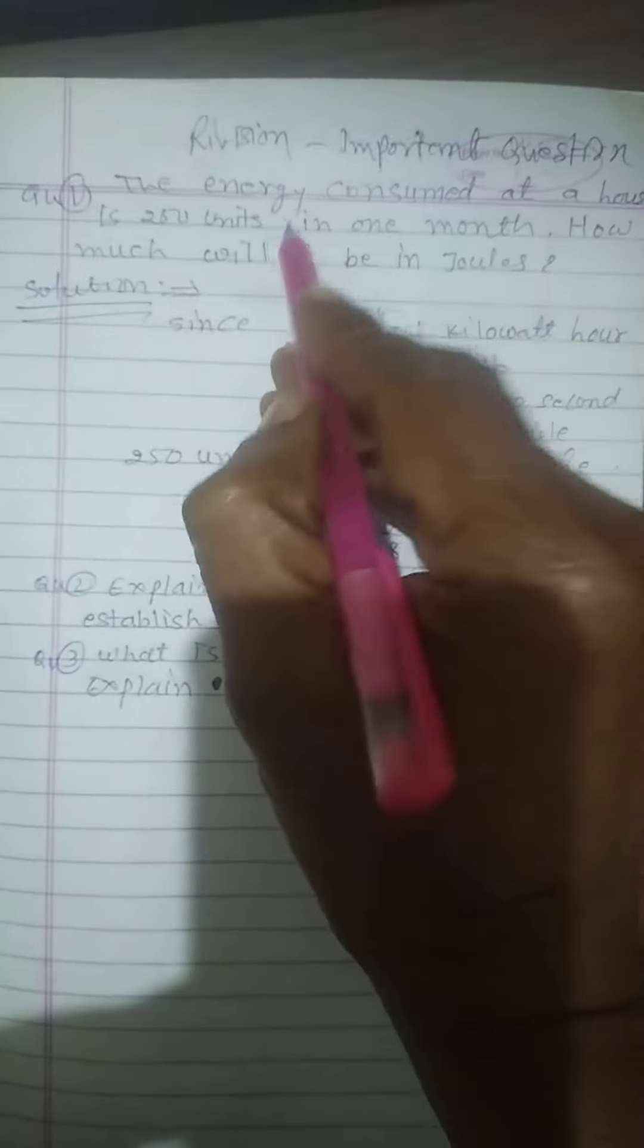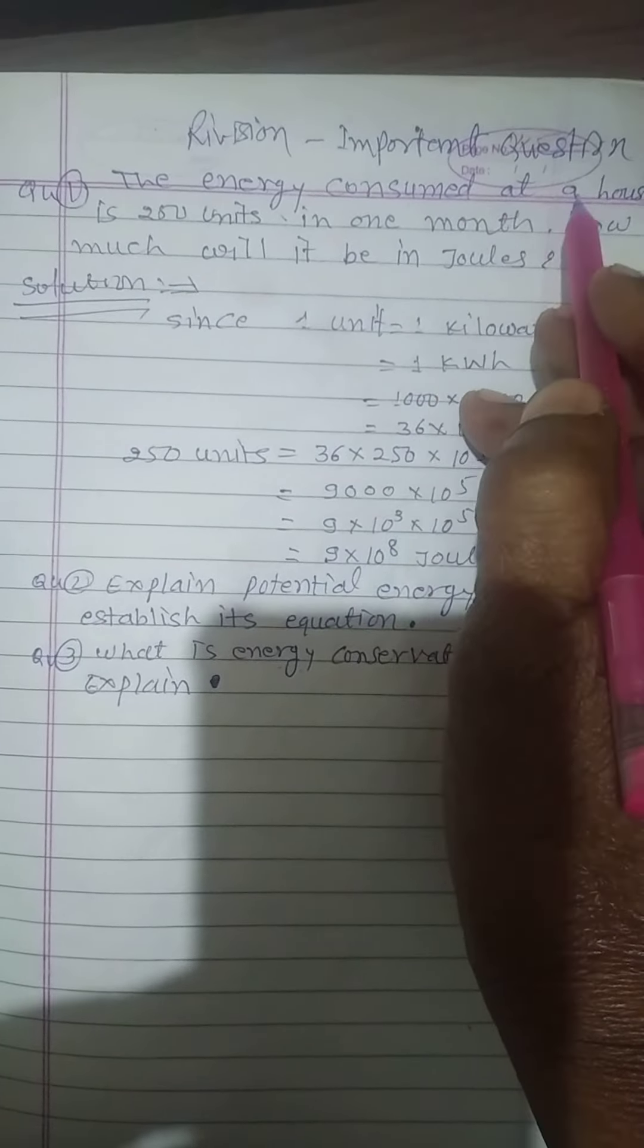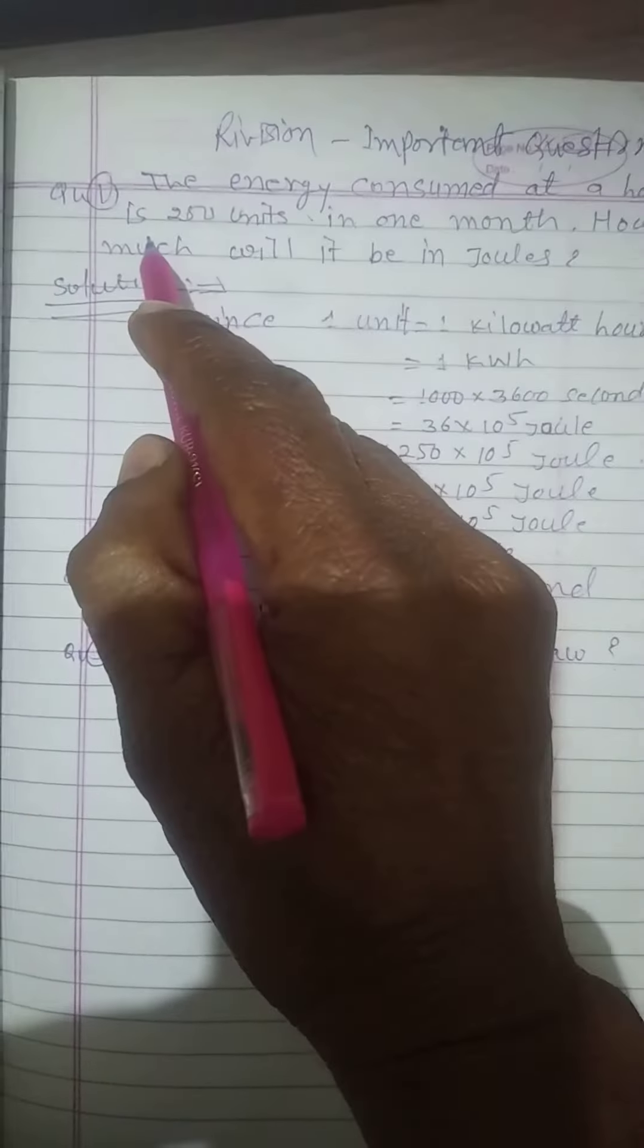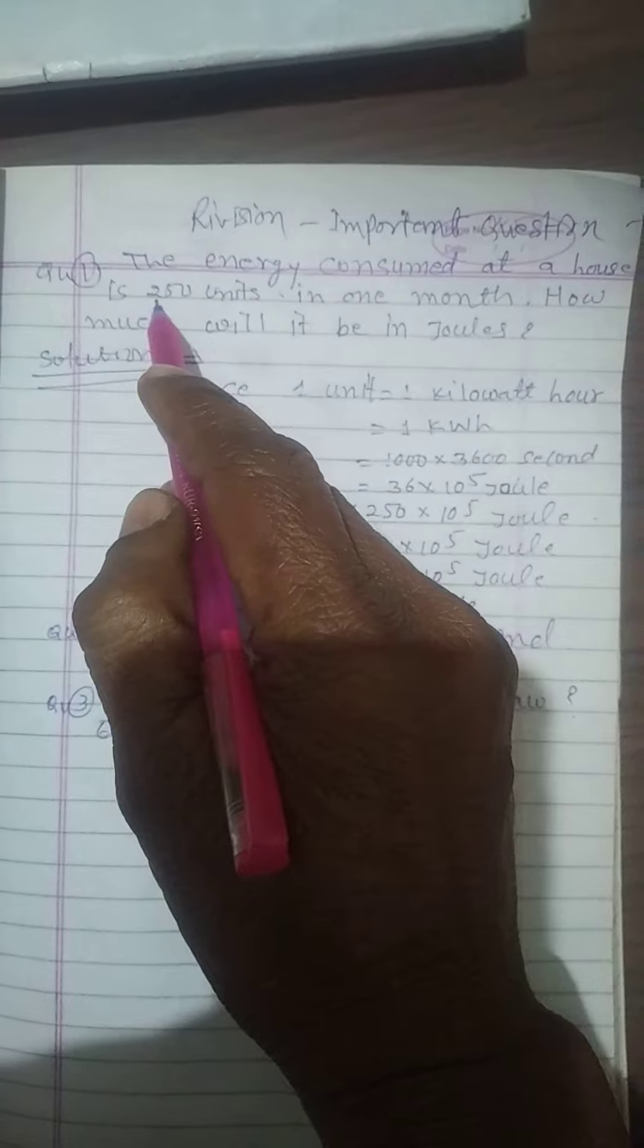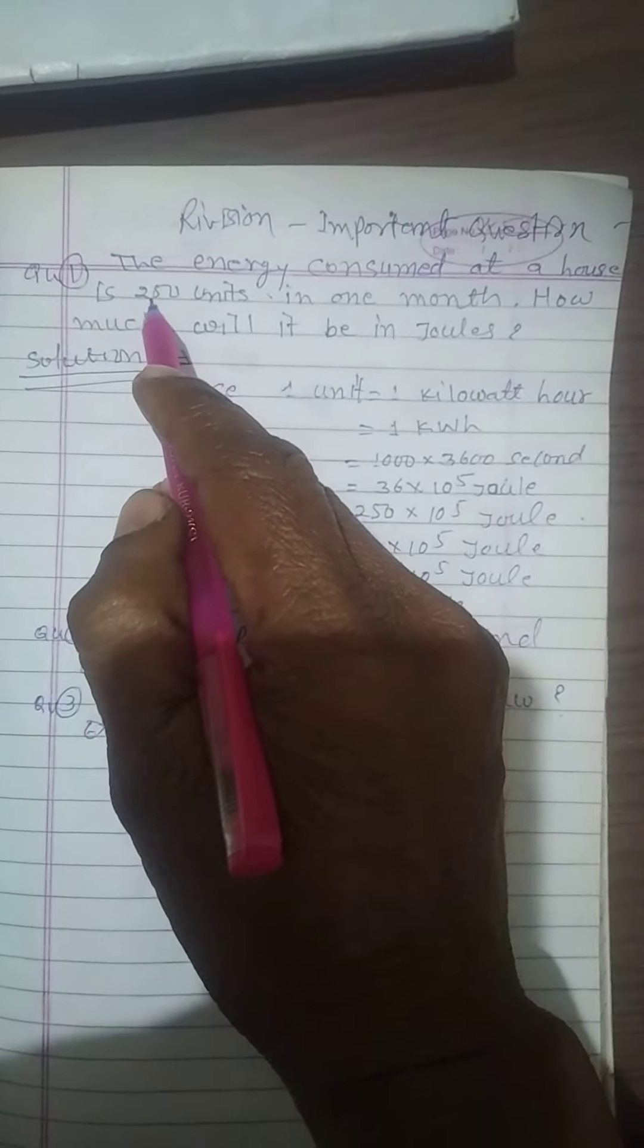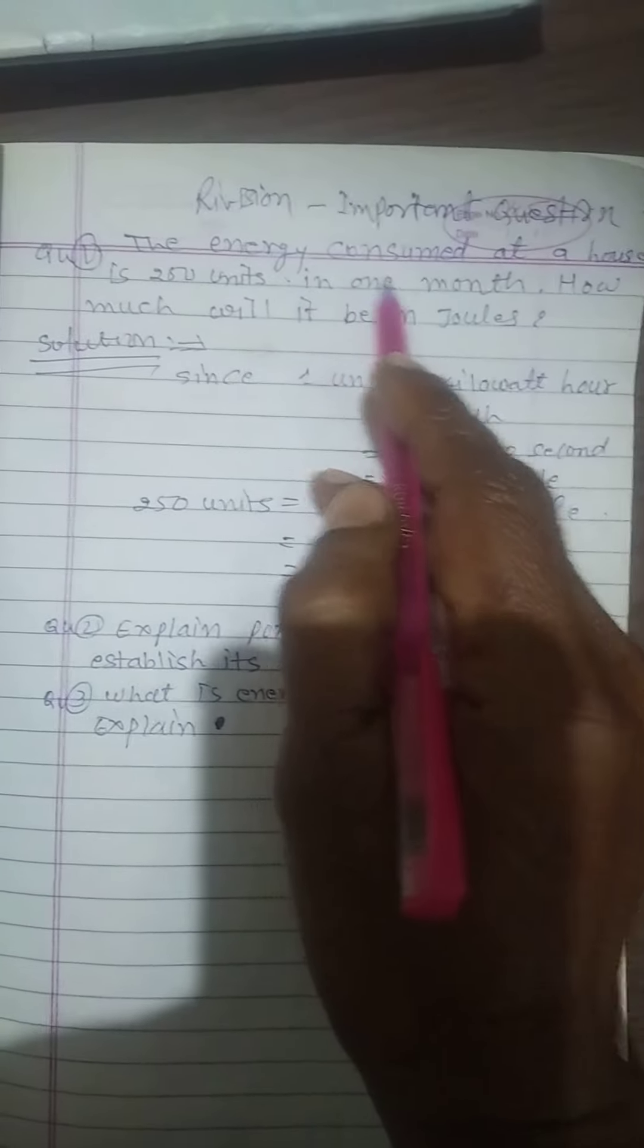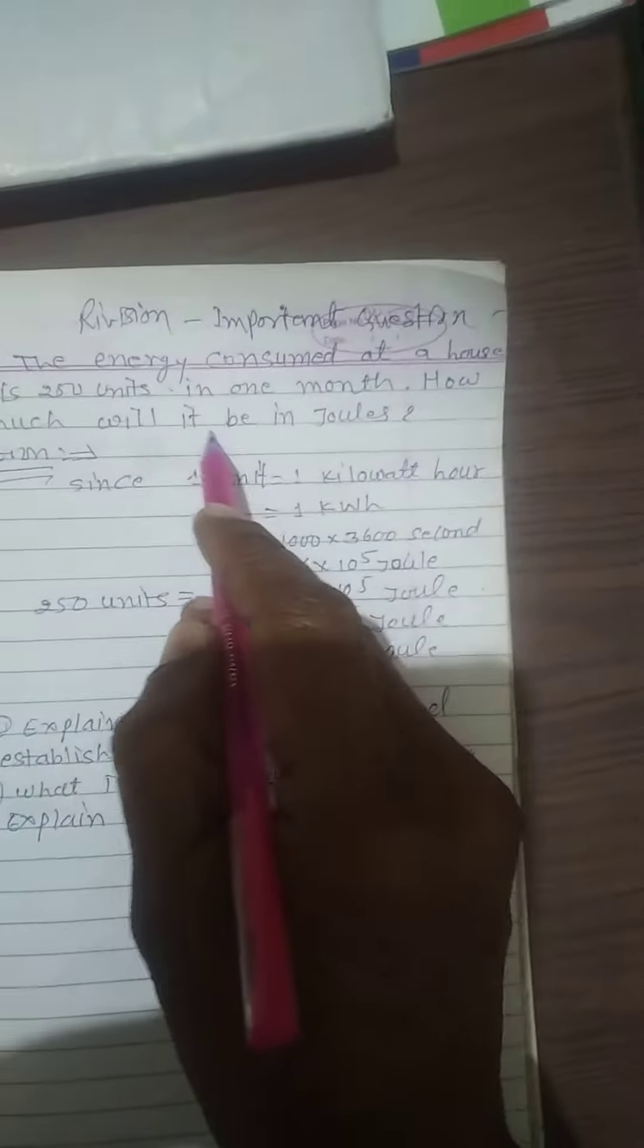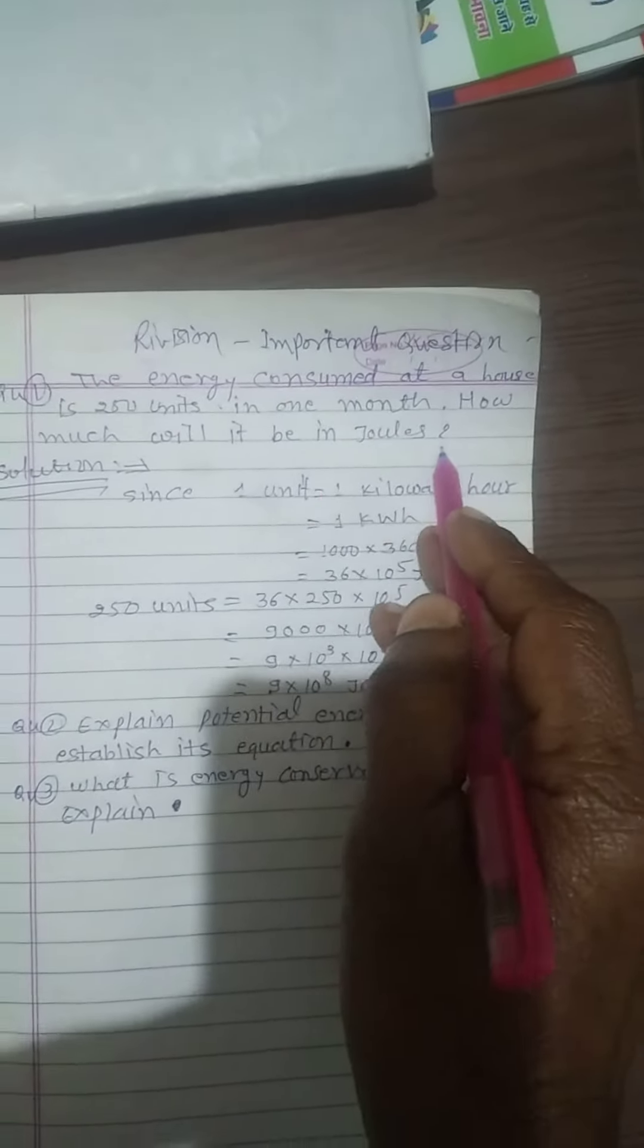The energy consumed at a house is 250 units in one month. How much will it be in Joules?